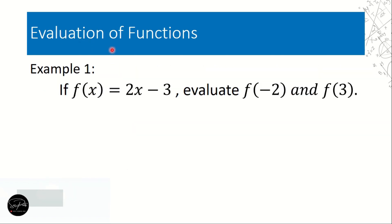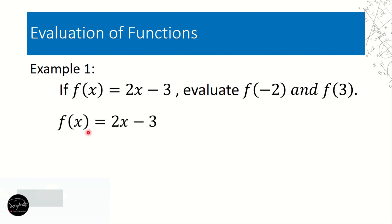Let's have example number 1. If f(x) is equal to 2x minus 3, evaluate f(-2) and f(3). We'll have two solutions for this example. Let's copy first our function notation: f(x) = 2x - 3.